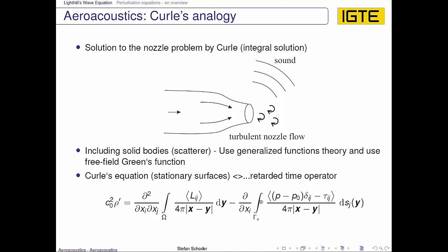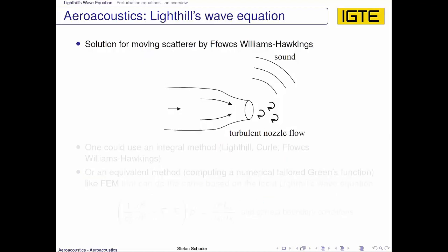An additional step was then done by Ffowcs Williams-Hawkins analogy. They included moving scatterers, so not only a stationary nozzle, but now the nozzle could move. Based on this theory and Lighthill's wave equation,